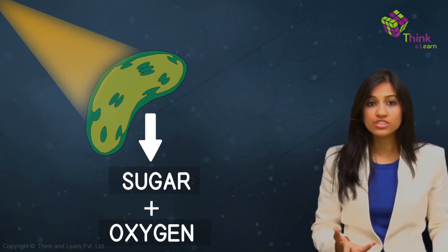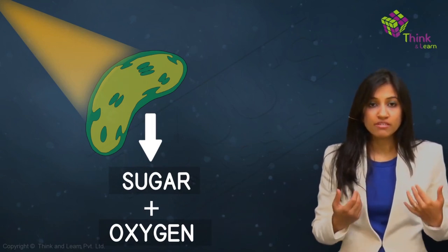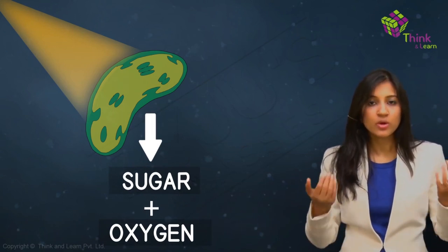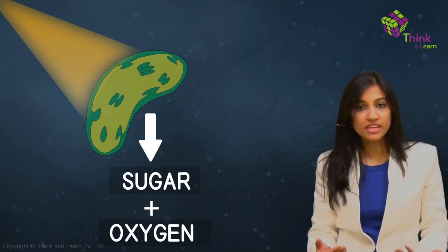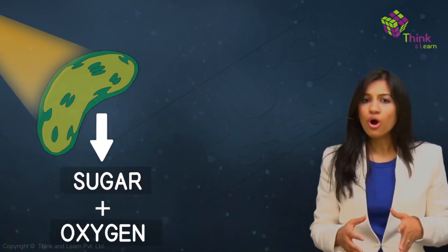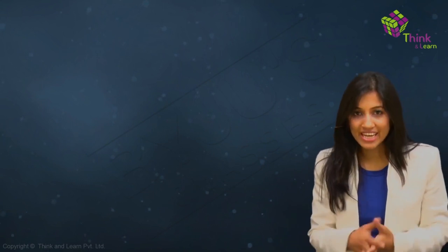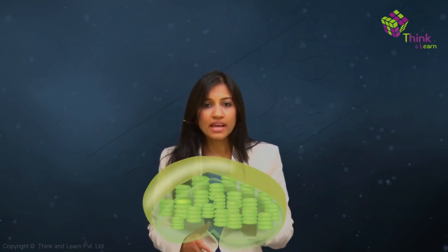The plants don't need the oxygen, so they get rid of it and give it to us to breathe and stay alive. All the green parts of the plant that you see — the non-woody stem, the leaves, the unripened fruits — all of them contain chloroplasts. So we'll get into more detail about a chloroplast.